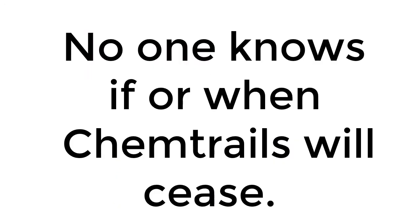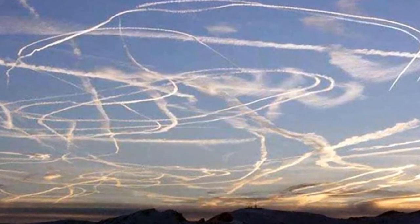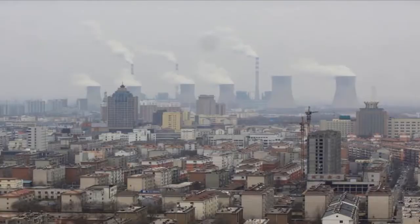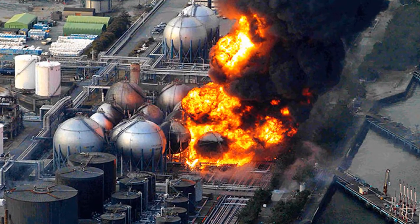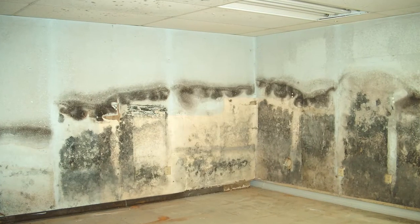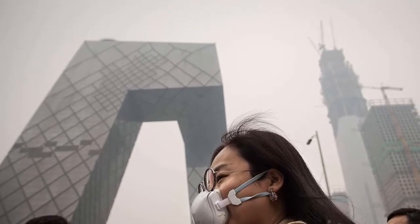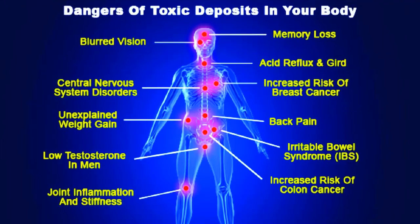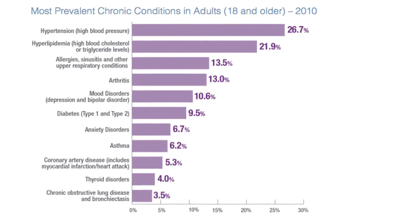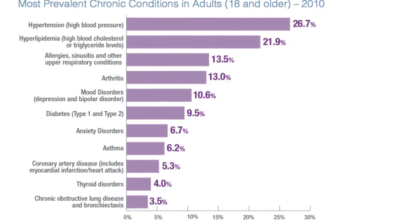No one knows if or when the chemtrails will cease, but regardless of the presence of chemtrails in our environment, other inescapable environmental toxins like tire dust, car exhaust, smog, nuclear fallout from the Fukushima accident, radiation from cell phones and tablets, as well as molds and fungi, are all being absorbed by your body and causing SNPs in your DNA on a daily basis, as well as an accumulation of toxins that affect your health negatively. Don't let yourself be one of the millions of people who suffer from the effects of ever-increasing environmental toxins.